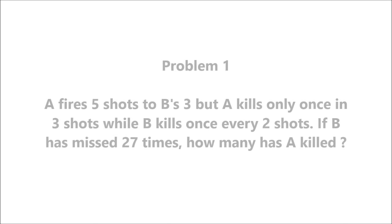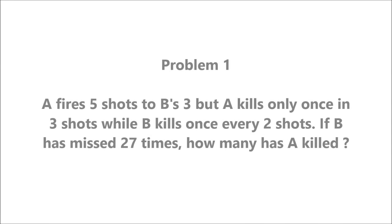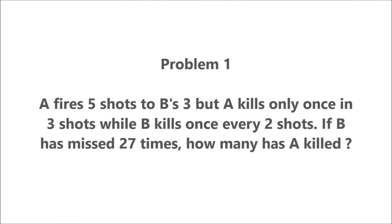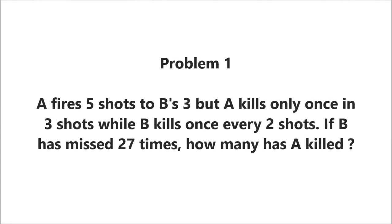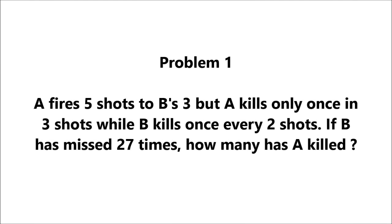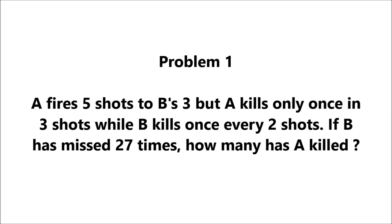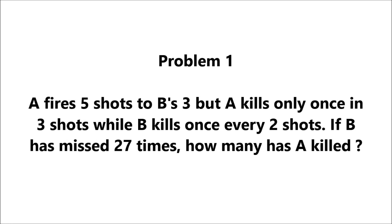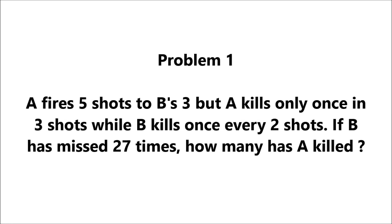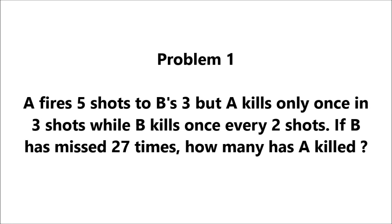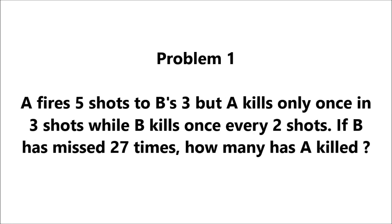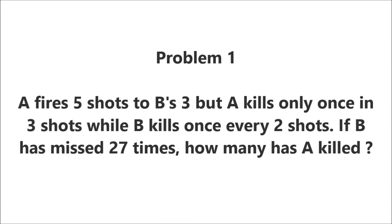Problem 1. A fires 5 shots to B's 3, but A kills only once in 3 shots while B kills once every 2 shots. If B has missed 27 times, how many has A killed?